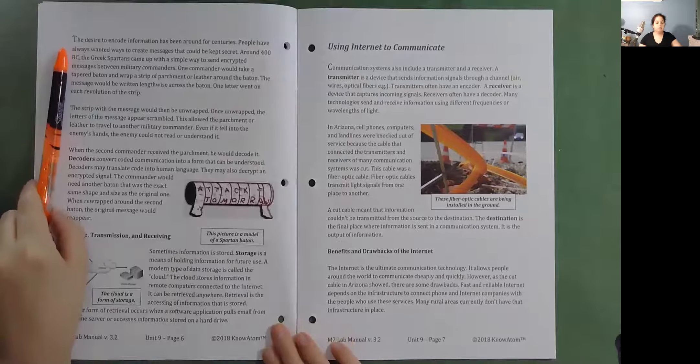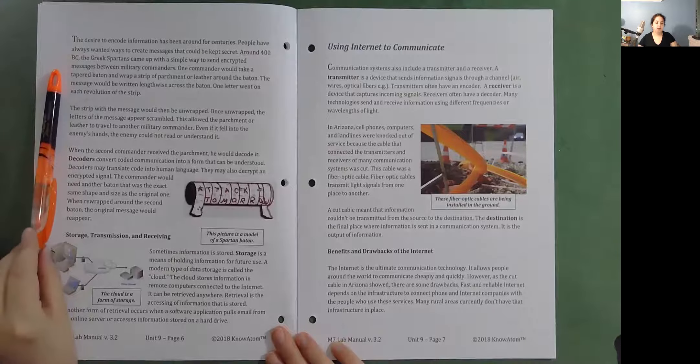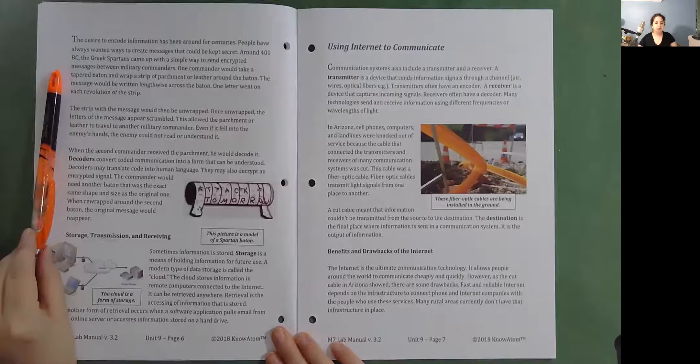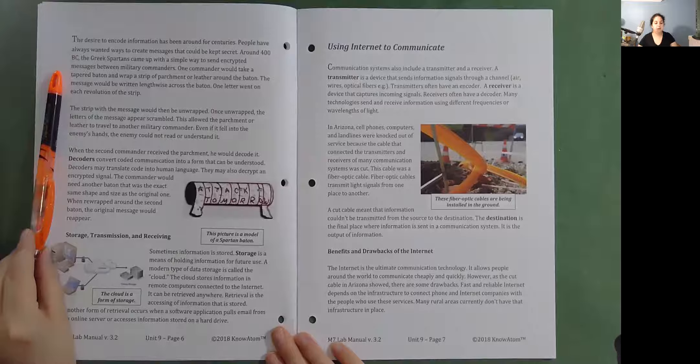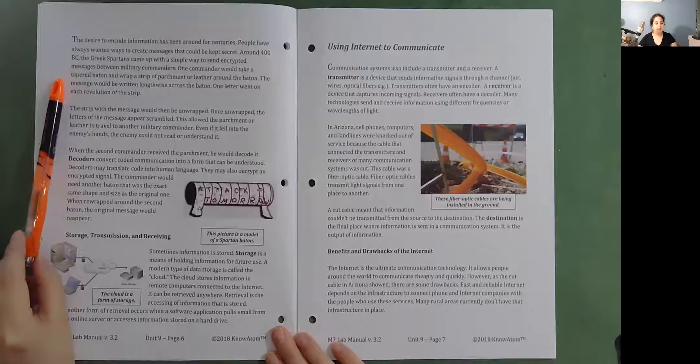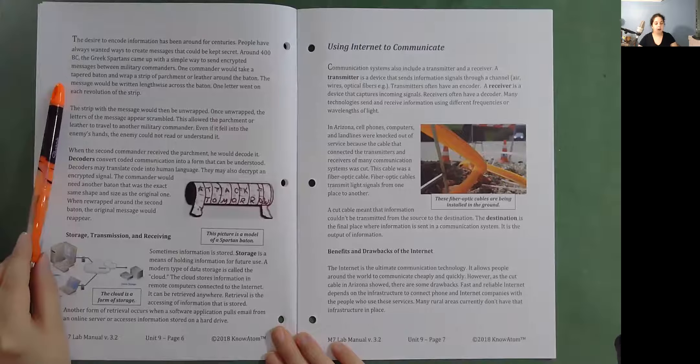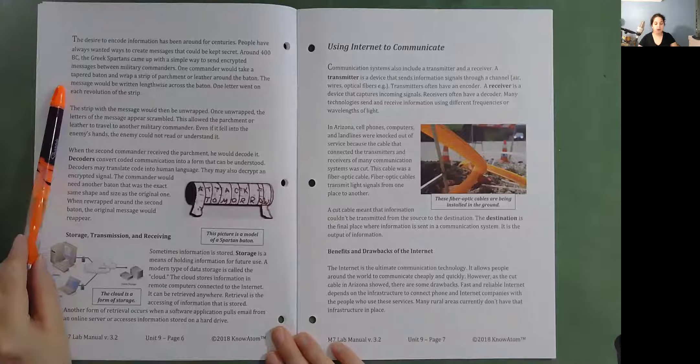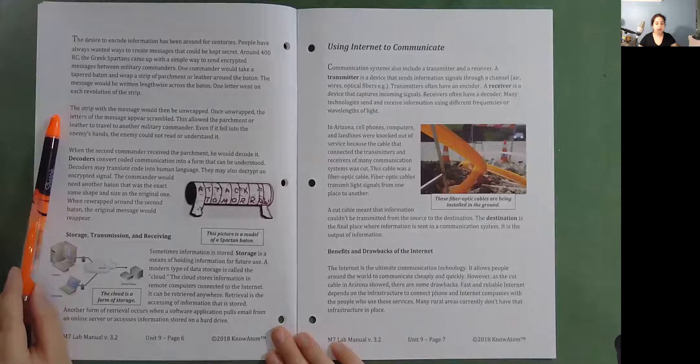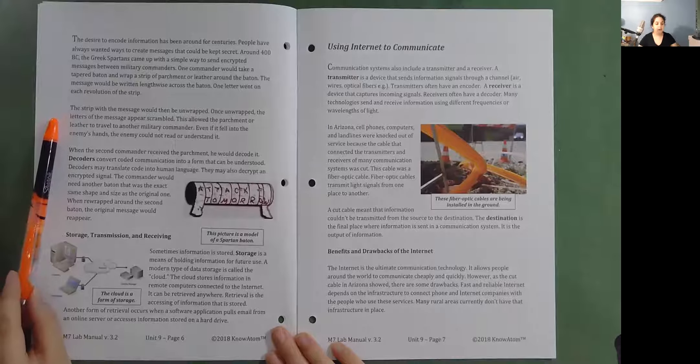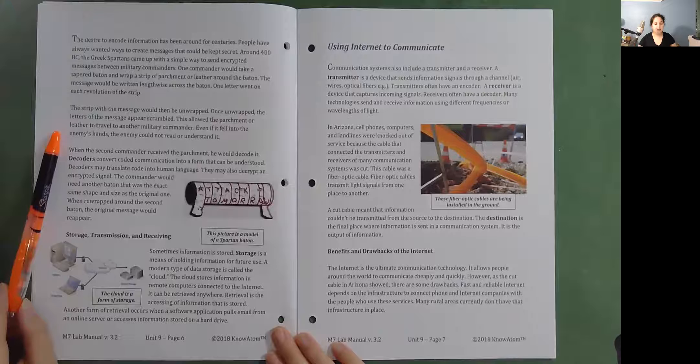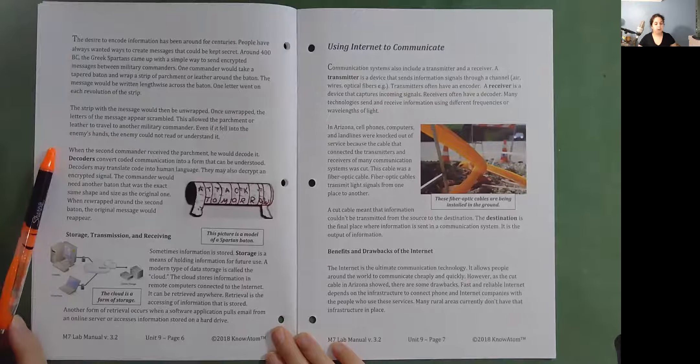The desire to encode information has been around for centuries. People have always wanted ways to create messages that can be kept secret. Around 400 BC, the Greek Spartans came up with a simple way to send encrypted messages between military commanders. One commander would take a tapered baton and wrap a strip of parchment or leather around the baton. The message would be written lengthwise across the baton. One letter went on each revolution of the strip. The strip with the message would then be unwrapped. Once unwrapped, the letters of the message appear scrambled. This allowed the parchment or leather to travel to another military commander. Even if it fell into the enemy's hands, the enemy could not read or understand it. When the second commander received the parchment, he would decode it.